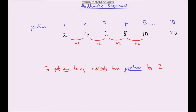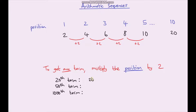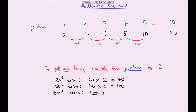So we can write that out as a rule: to get any term in our sequence we just multiply the position number by two. If we wanted to find the twentieth term we just do twenty times two which gives us forty. If we wanted to find the fiftieth term we just do fifty times two which gives us a hundred. And if we wanted to find the one thousandth term we just do one thousand times two and that gives us two thousand. So it's a really quick way of finding any term in an arithmetic sequence.